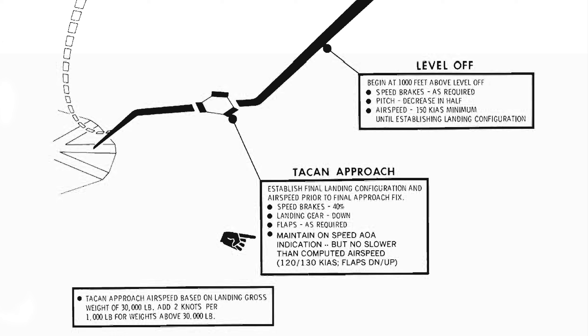The second phase is Level Off. The aircraft is returned to level flight, with airspeed at a minimum of 150 knots.